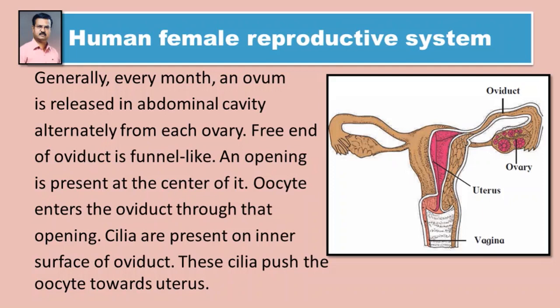An opening is present at the center of the funnel-shaped end of the oviduct. The oocyte enters the oviduct through that opening. Cilia are present on the inner surface of the oviduct; these cilia push the oocyte towards the uterus. Manje tya chidratun andapeshi and nalikemadhe pravesh karte, va andanalikecha aatil prushthabhagavar romke astat jo andapeshila garbhashayakade dhaklaneyache kaam kartat.